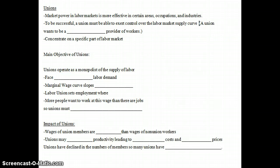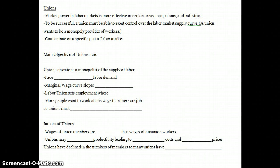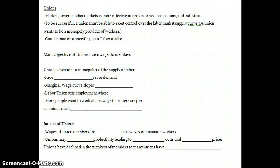A union wants to be what we call a monopoly provider of workers — a monopoly supplier of workers in the industry — since the supply of labor is the workers. Unions concentrate on a specific part of the labor market, which is why we see industrial unions or craft unions focusing on specific types of workers. The main objective of unions is to raise wages for members. They also improve working conditions, job security, retirement funds, vacation time, health insurance, and other benefits. In their earlier days, unions did a lot to ensure workplace safety.